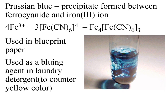To write the formula of Prussian blue: a precipitate must be electrically neutral, so we need a neutral formula between a +3 cation and a 4− anion. The only way to get a neutral formula is to have four of the +3 ion and three of the −4 ion. Prussian blue is used in blueprint paper and as a bluing agent in laundry detergent.